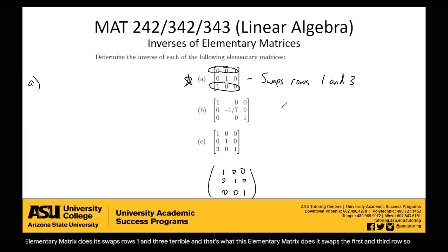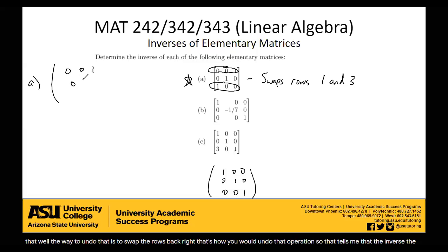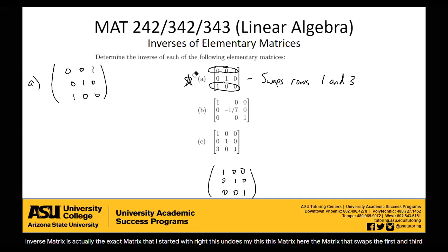So how would we invert that operation? Say I've gone and swapped my first and third row — how do I undo that? Well, the way to undo that is to swap the rows back. That tells me that the inverse matrix is actually the exact same matrix I started with. This undoes itself: the matrix that swaps the first and third row is undone by swapping them back. So it's its own inverse — this matrix is its own inverse.